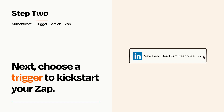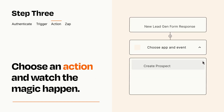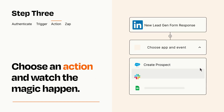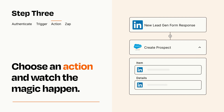This last part is where the magic happens. Choose the action you want to happen in your target app. You'll see a bunch of fields where you can specify the details of your Zap. You can type free form text or pull data in from your trigger step as needed.